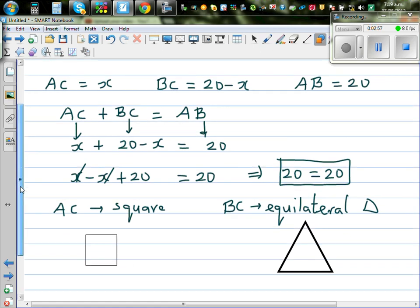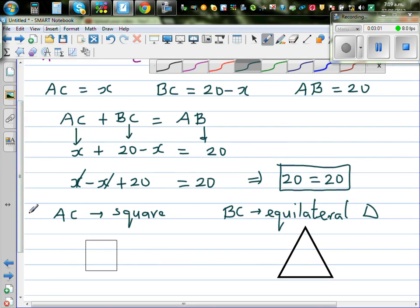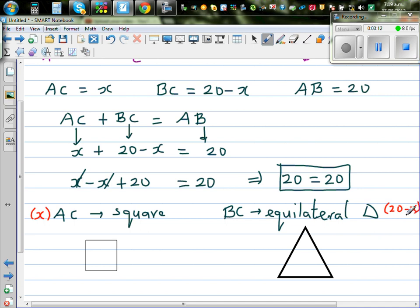So here, AC if it is divided from x, we know the length of AC is x. And the length of BC is 20 minus x. So the length of each side would be a quarter of this. So you can say this is x over 4. This is also x over 4. x divided by 4. And x over 4. So the length of each side would be x over 4.